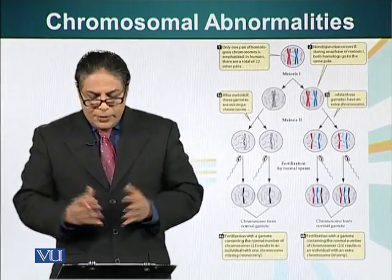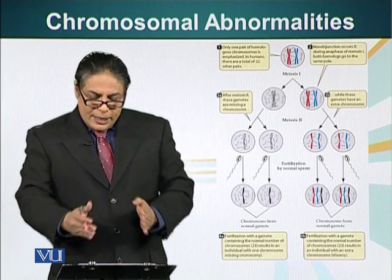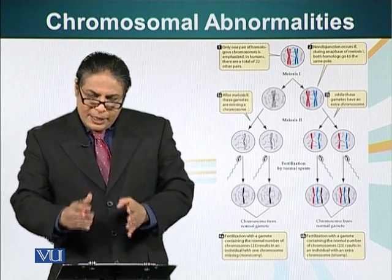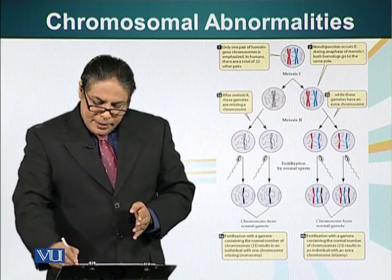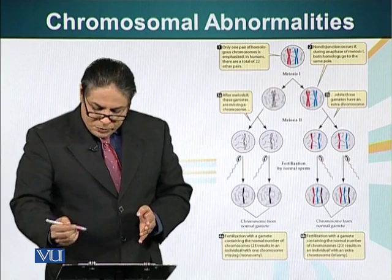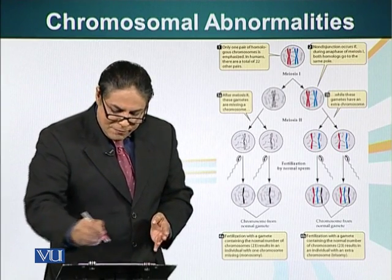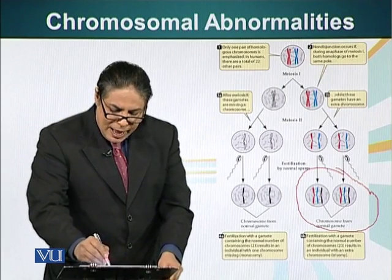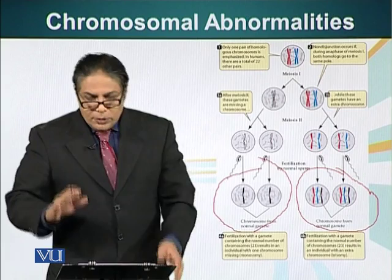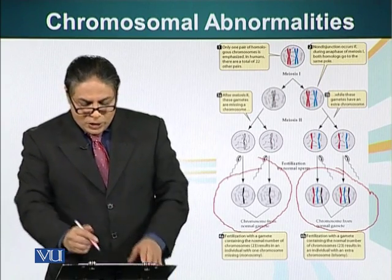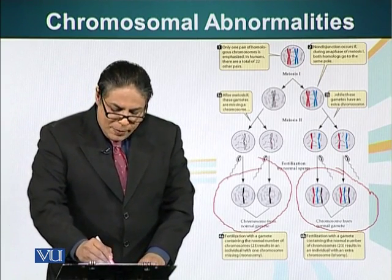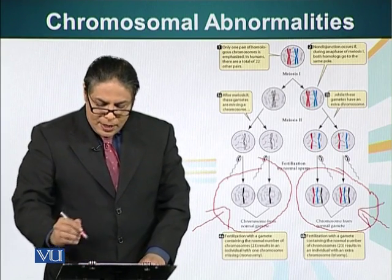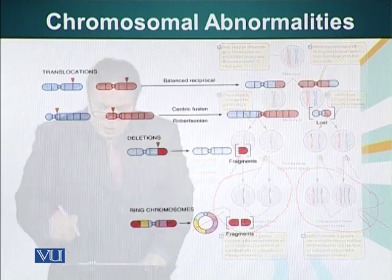Here we see meiosis in which there is non-disjunction. You can see that some gametes have an extra chromosome (N plus 1) and some gametes have one fewer chromosome (N minus 1), giving 2N plus 1 and 2N minus 1 in the resulting cells. This is a type of aneuploidy.